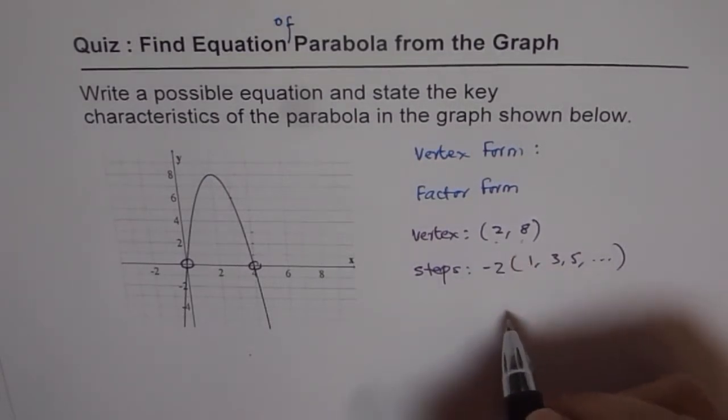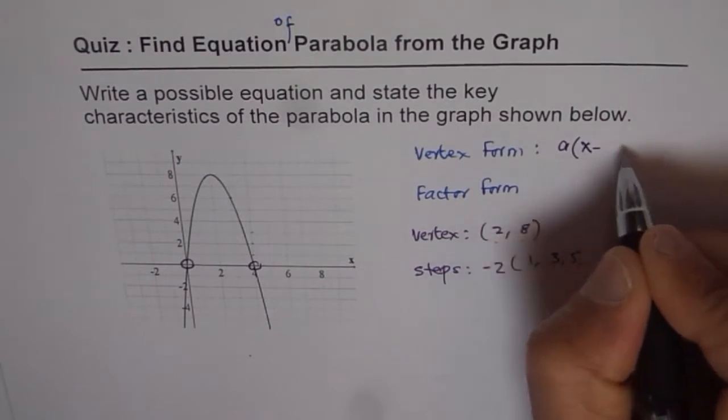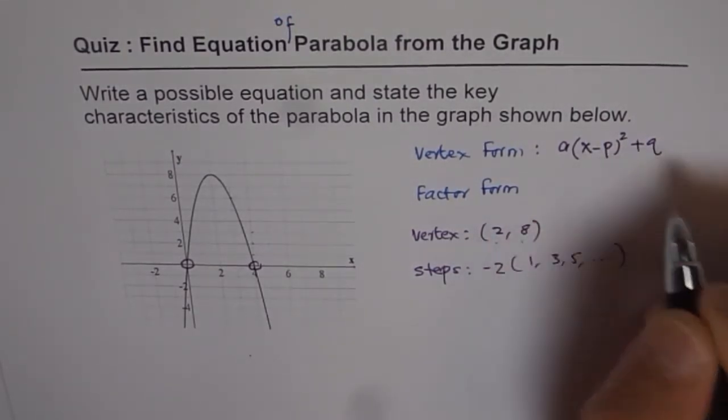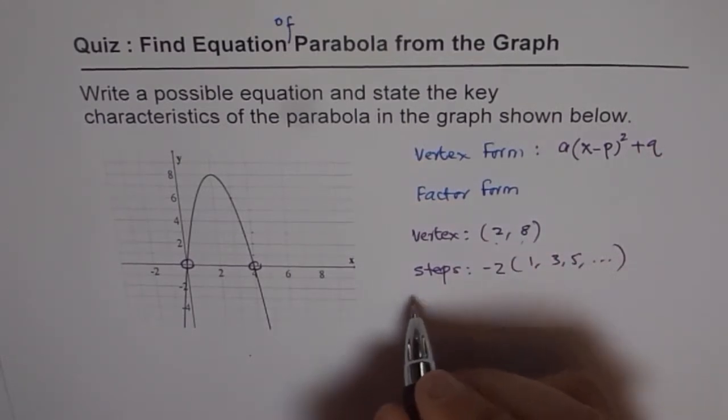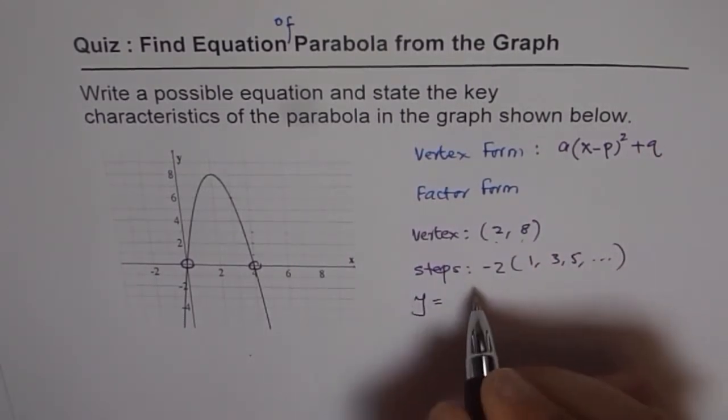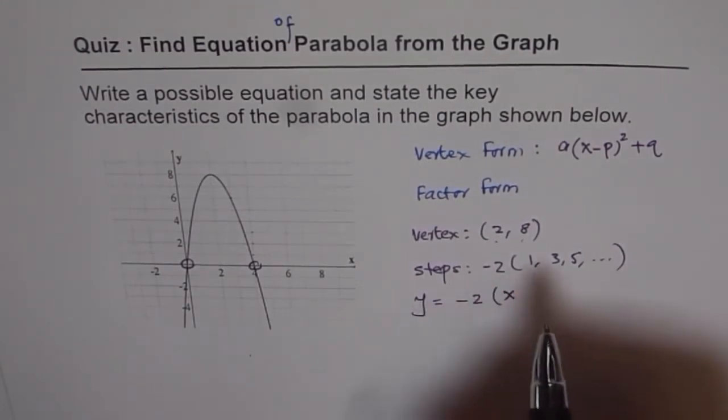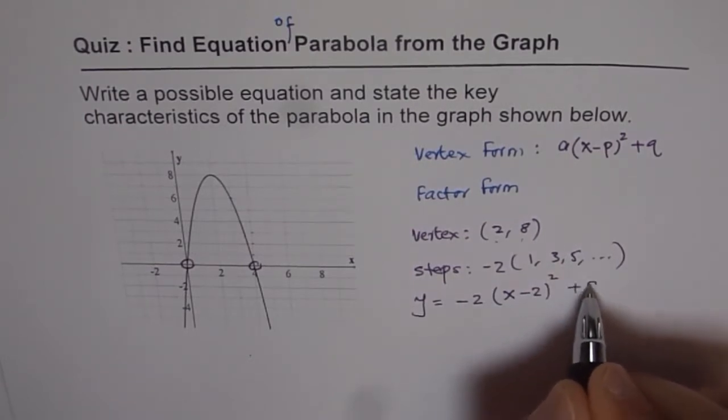This is the vertex form equation. Normally, vertex form will be a(x - p)² + q. Some of you use c and d here, but that's okay. Using these, we can say the equation is y equals... a is minus 2 for us... so minus 2(x - 2)² + 8.